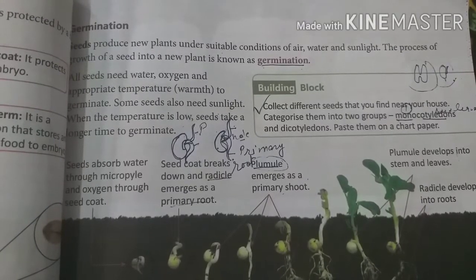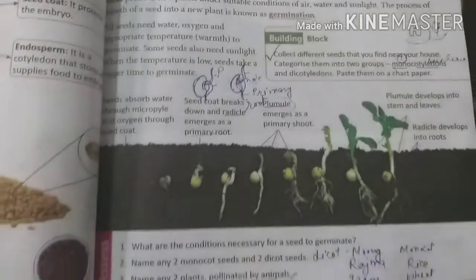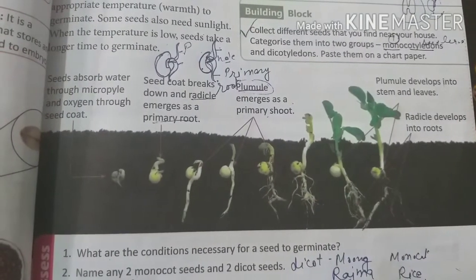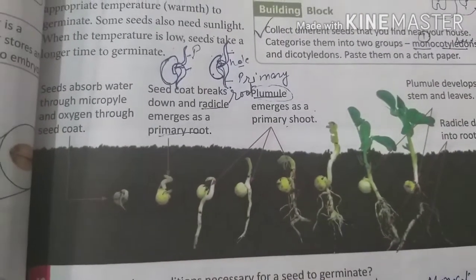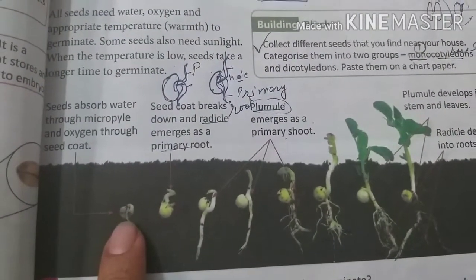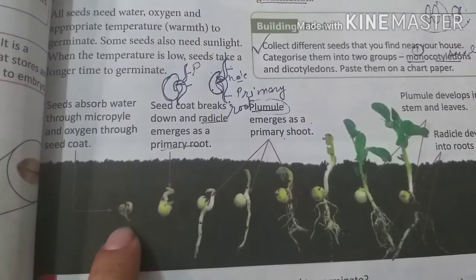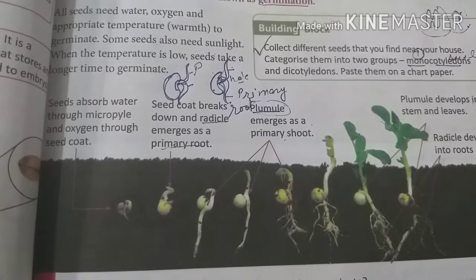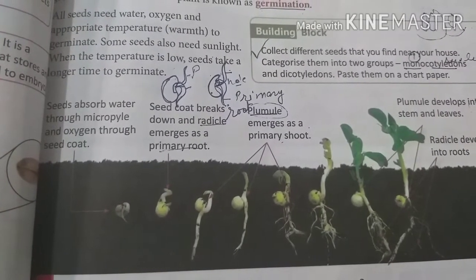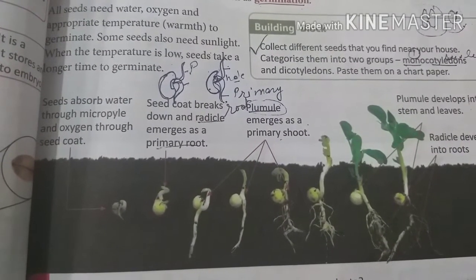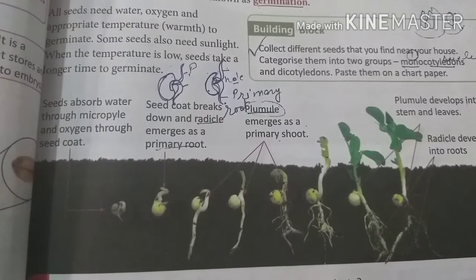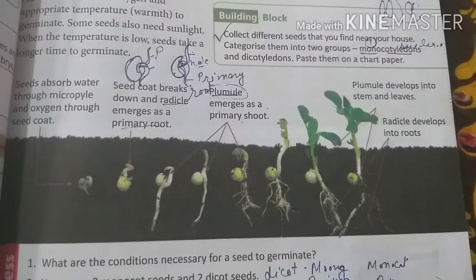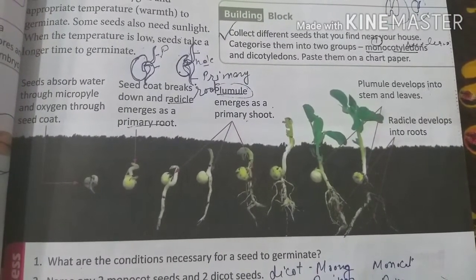Seeds take a longer time to germinate in low temperatures. Now you can see germination here. The seed absorbs water from the micropyle and oxygen from the seed coat. Then the seed coat breaks and the radicle comes out — this radicle is called the primary root. Then the plumule or primary shoot comes out, and the plumule converts into the stem and leaves, while the radicle develops into roots.